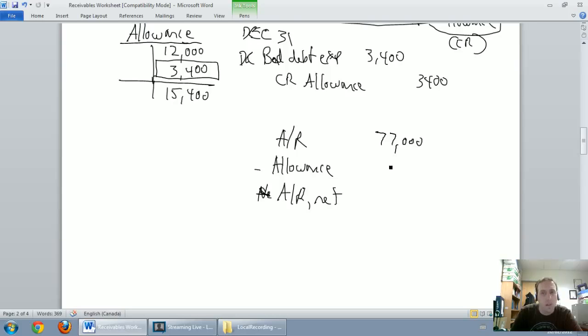Our accounts receivable was $77,000. The ending balance of our allowance is $15,400. I don't want to tell you the number of times I've had students write $3,400 in as this number, you know, write the amount of the journal entry. No, no, no. It's the ending balance of our allowance, and that's $15,400. So $77,000 minus $15,400 will give us the net amount of our accounts receivable. $77,000 minus $15,400 is $61,600.